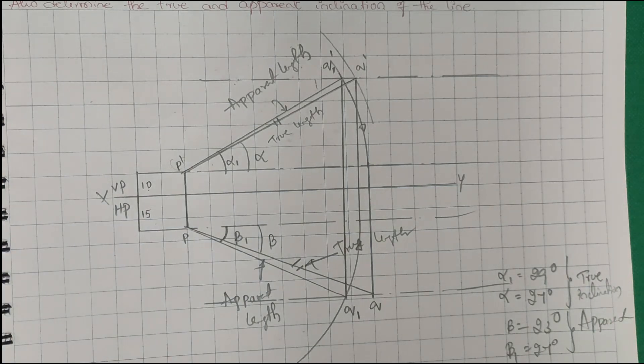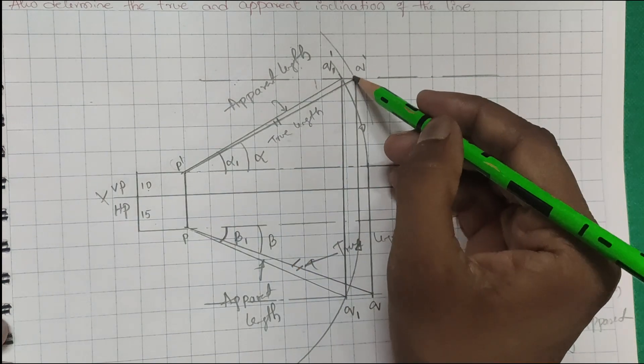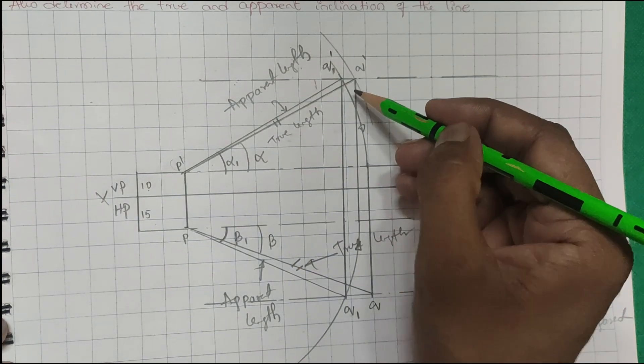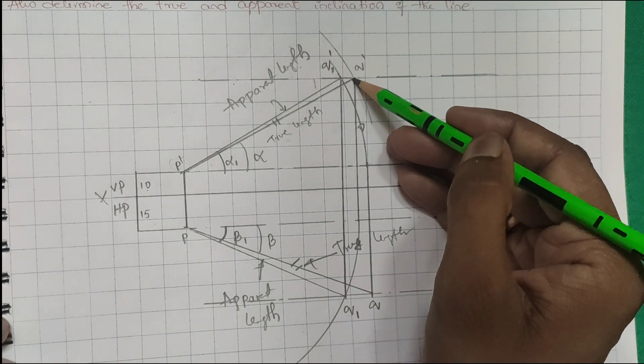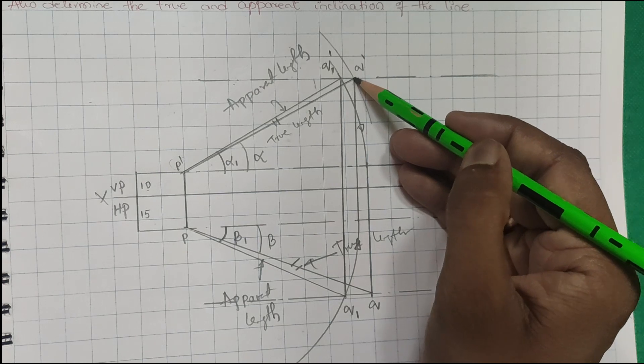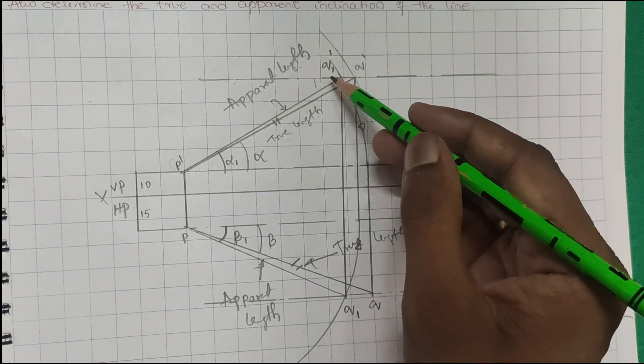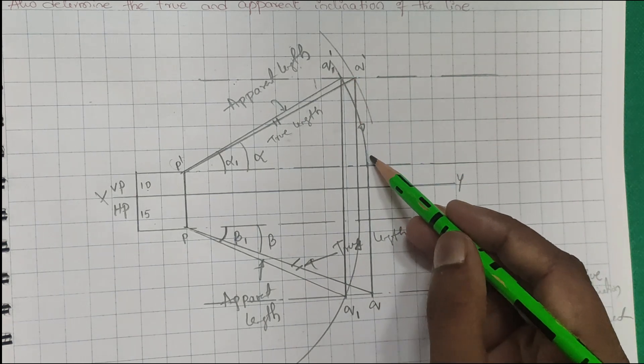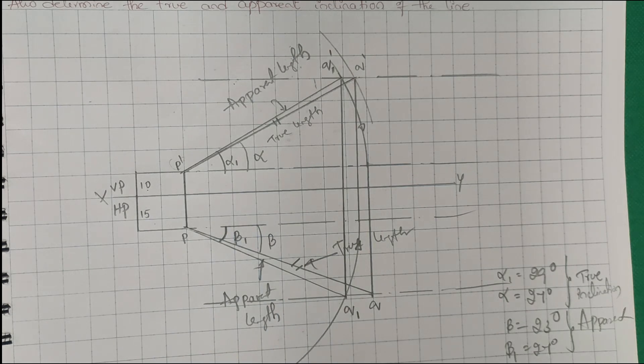This completes the fourth problem. It's very tricky but it is a very easy problem. First you have to draw an 85mm line, then cut a 75mm arc which extends up to the 85mm line. Then you will get the true length and true inclination. Next, with the apparent length you draw an arc, extend and join. You will get the true length and true inclination. This completes the fourth problem.